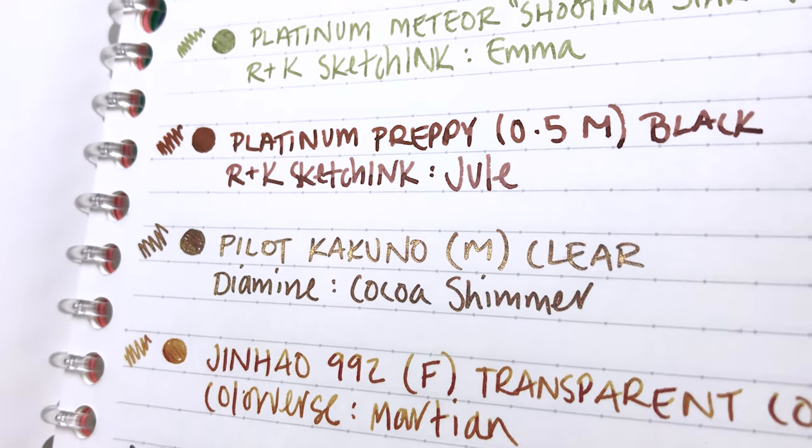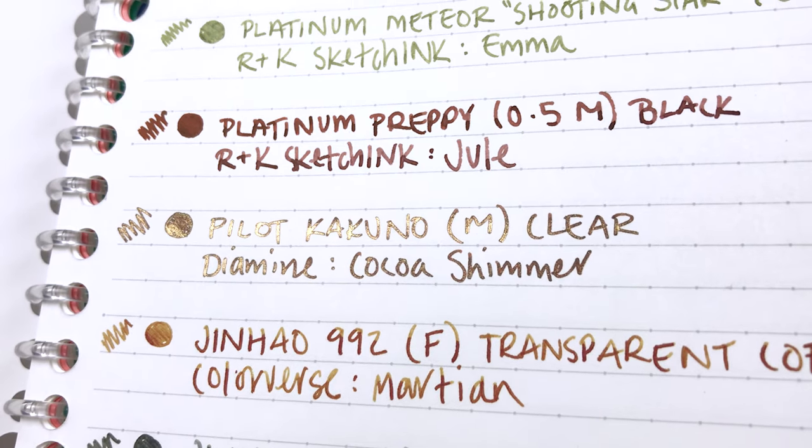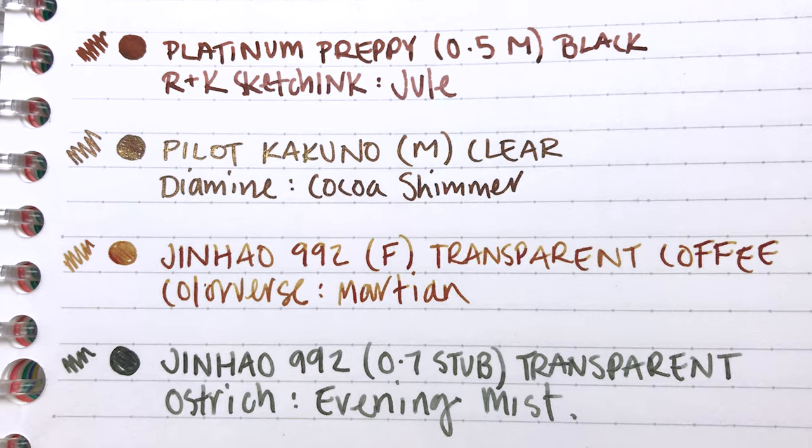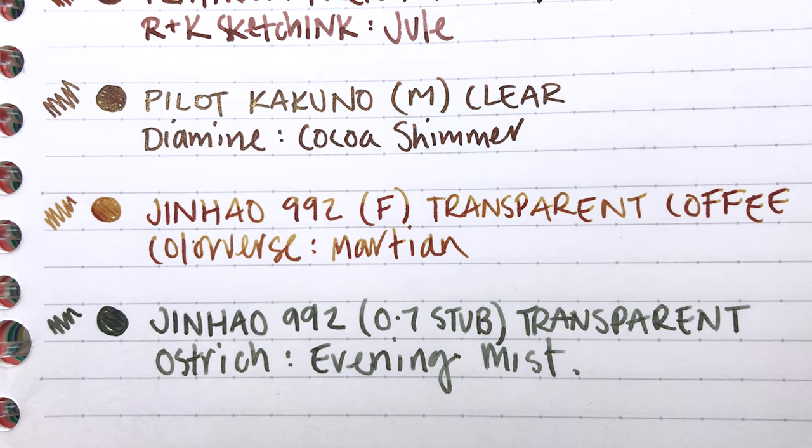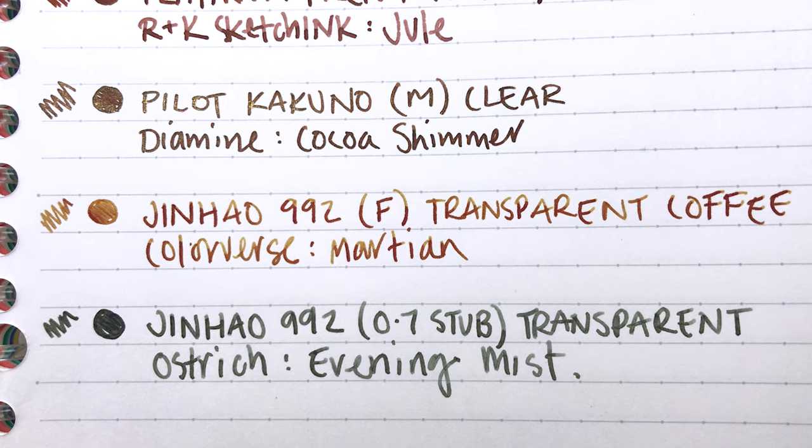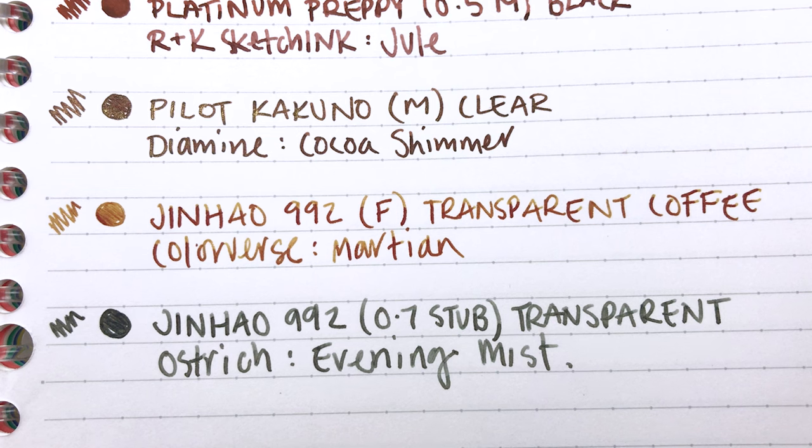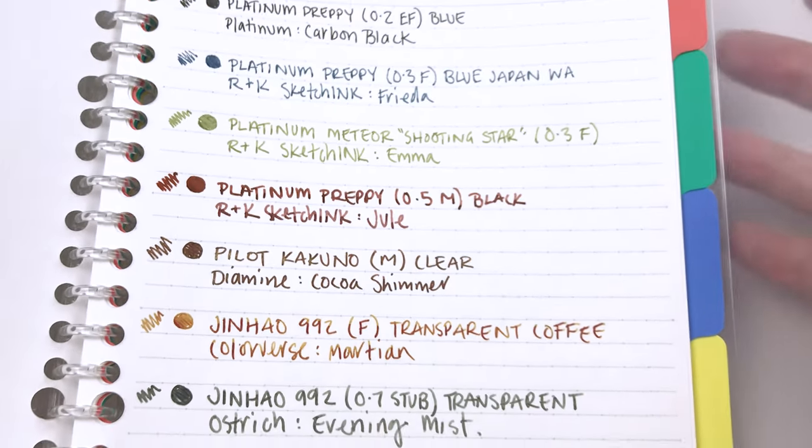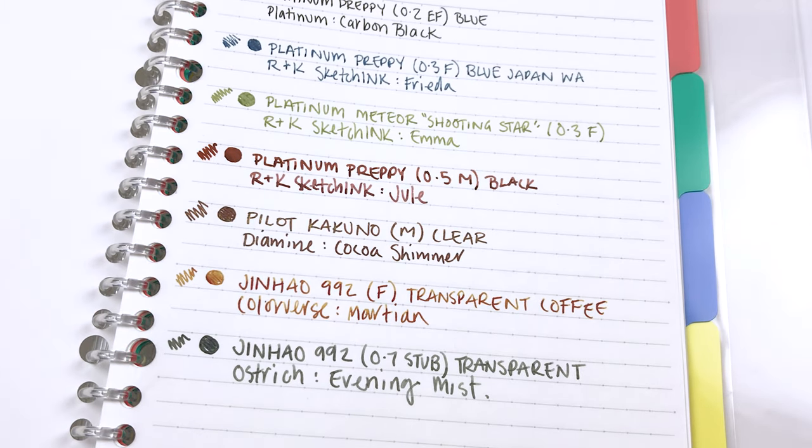We have the Pilot Kakuno in Medium. Look at that shimmer, it's so beautiful. This is supposedly the same width as the Preppy, but I feel like it writes a lot wetter but a lot thinner. Just a different feel, those two pens. Then we have our Jinhao 992s in the Fine and the 0.7 Stub. That Colorverse Martian ink is such a beautiful shader on the Fine, and the 0.7 Stub, although it's a little bit more expensive than the Fine, is really fun and worth trying out.